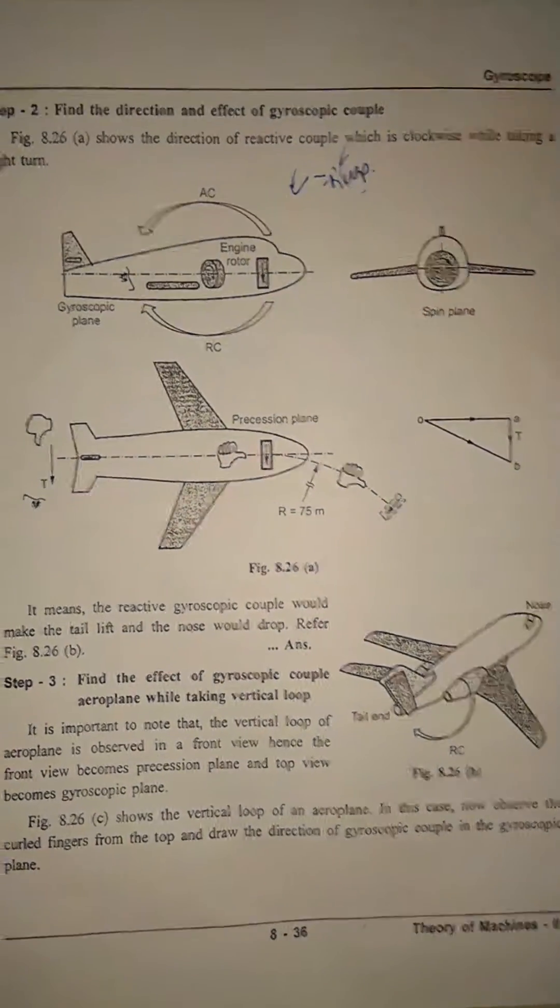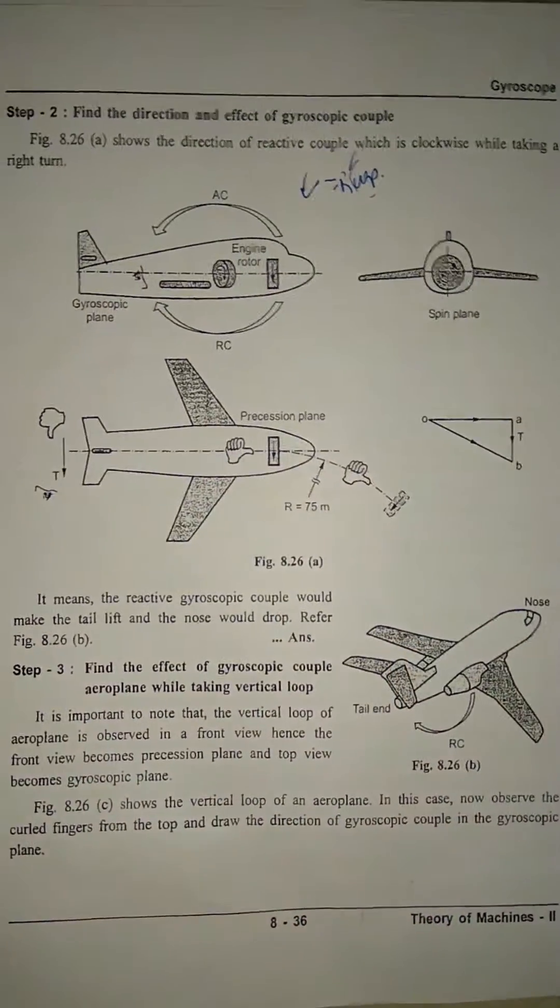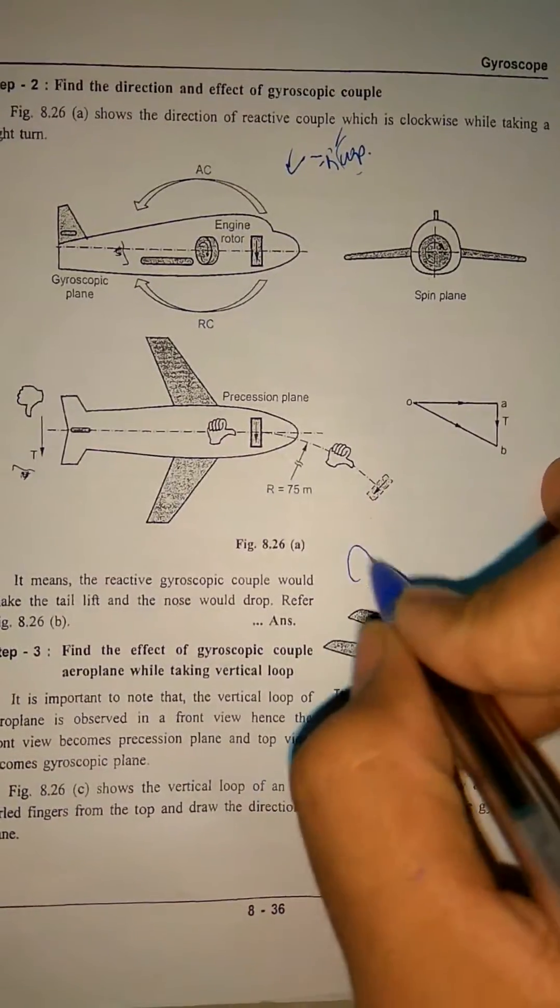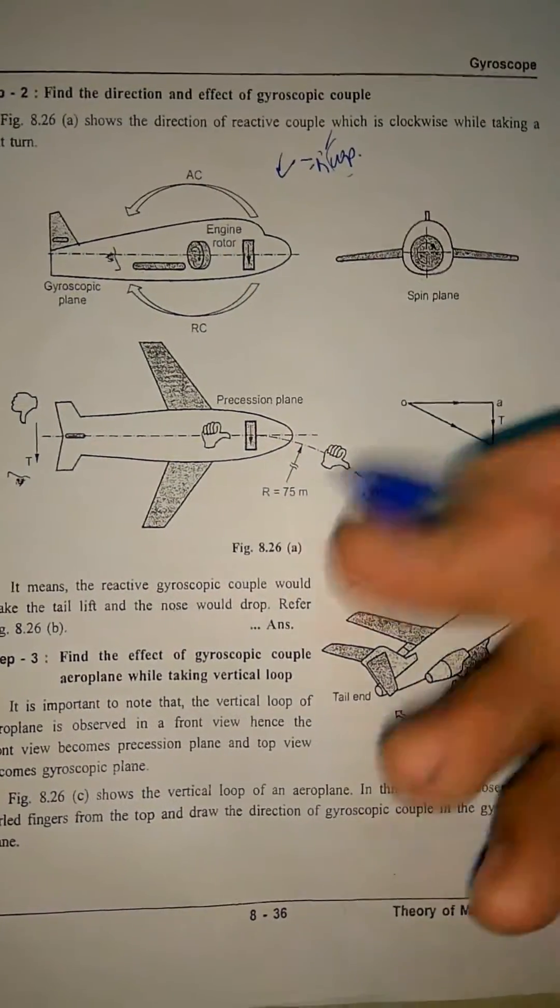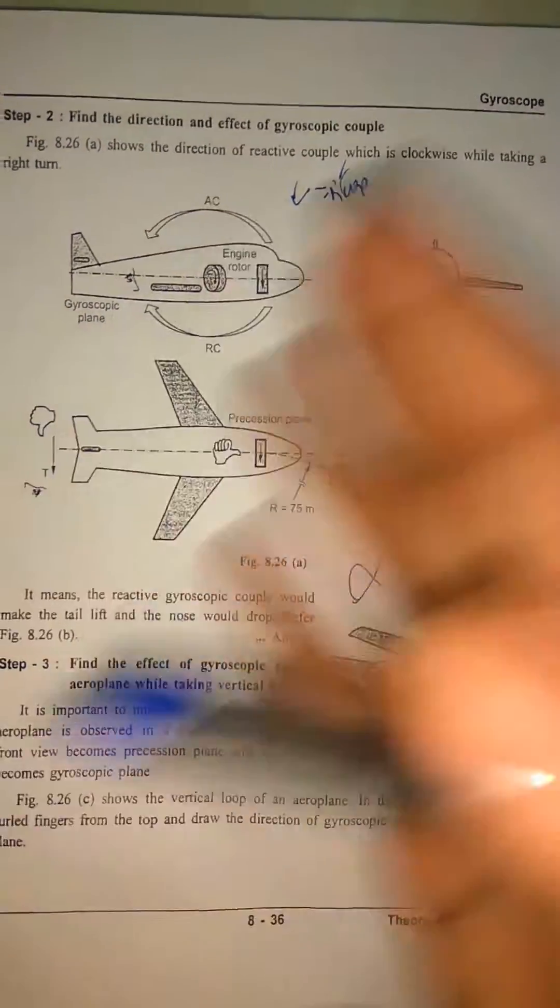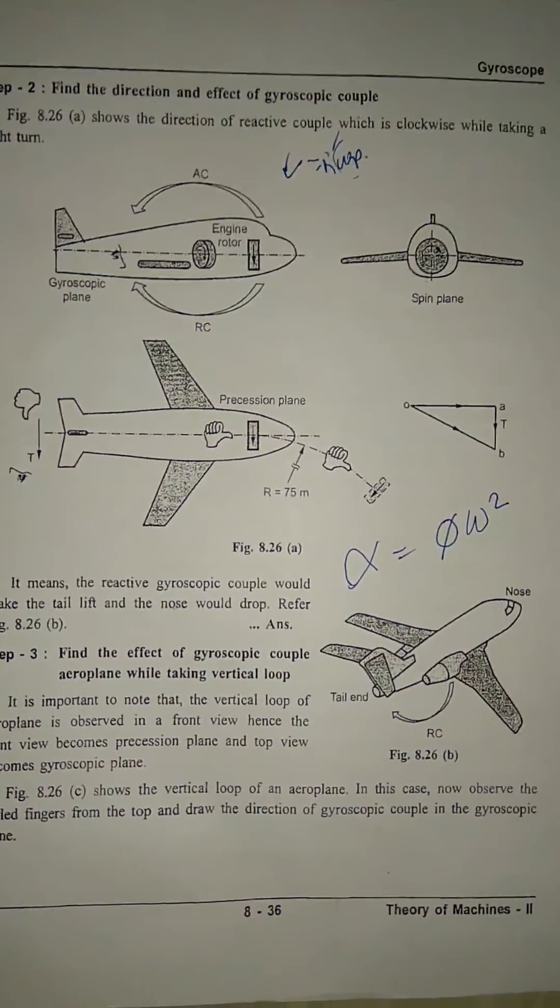Now when it is rolling, you don't see any gyroscopic effect. You will be asked to find alpha, that is phi omega squared. It is very pretty simple. That's all about the aeroplane. Let's see a numerical about disc—they are pretty similar.